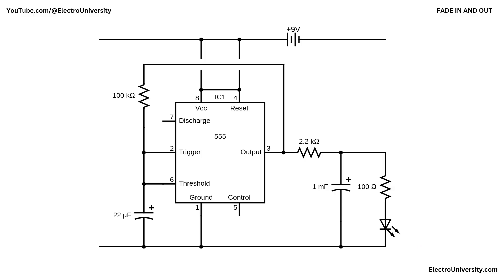When the output goes low, the capacitor discharges slowly through the 100-ohm resistor and the LED, causing it to fade out. The result is a smooth and repeating fade-in and fade-out LED effect, controlled by the timing of the 555 timer and the charging-discharging behavior of the large capacitor.